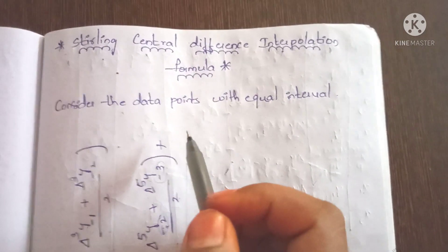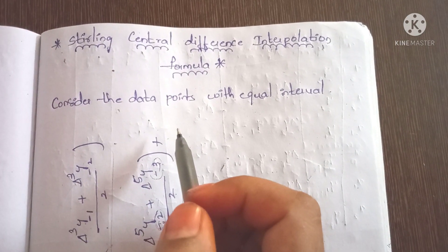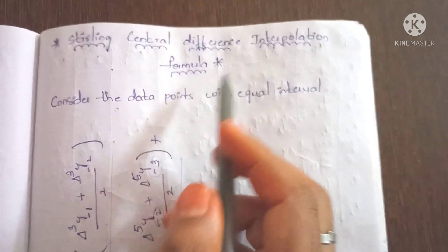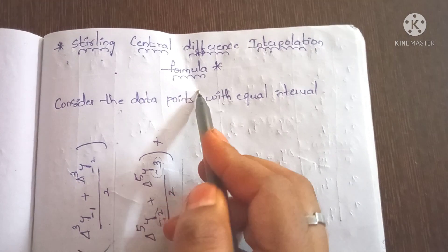Hi friends, this is Stirling's Central Difference Interpolation Formula.